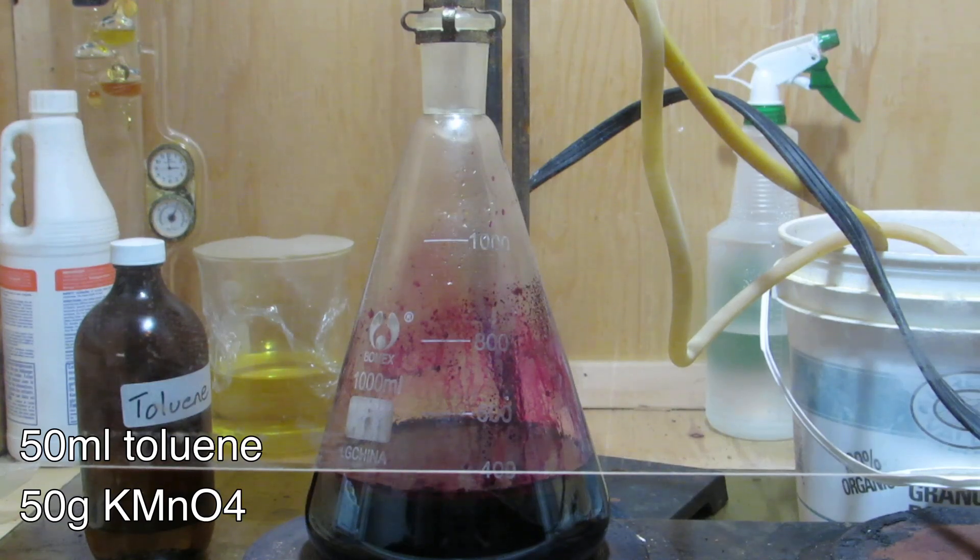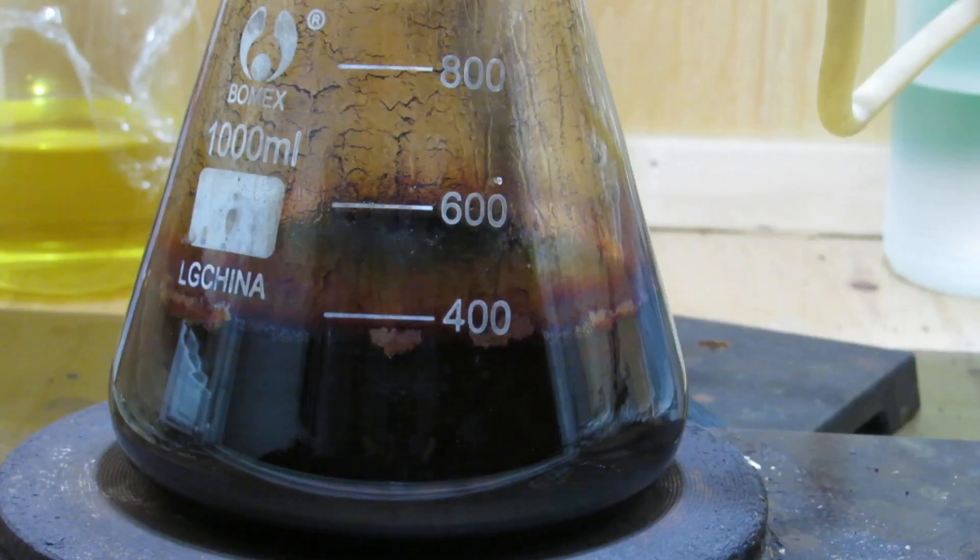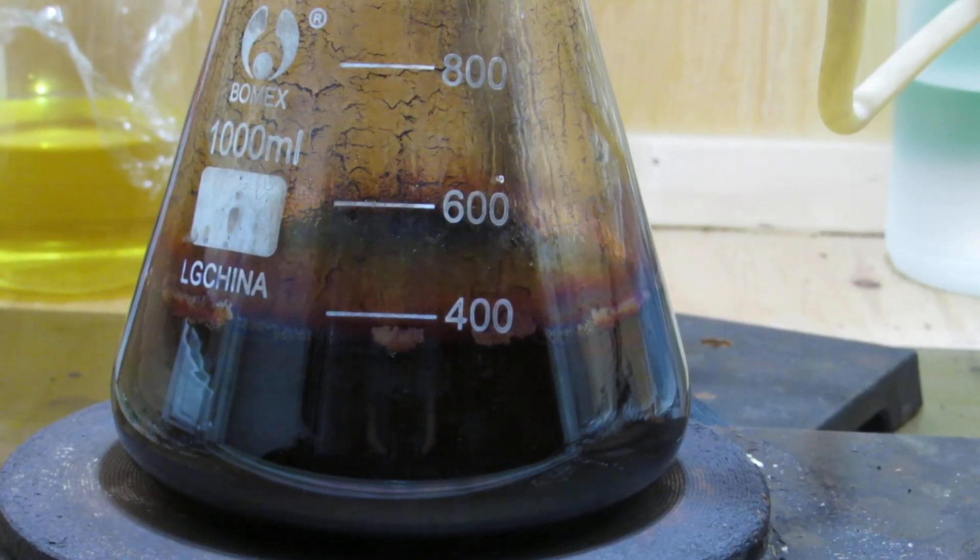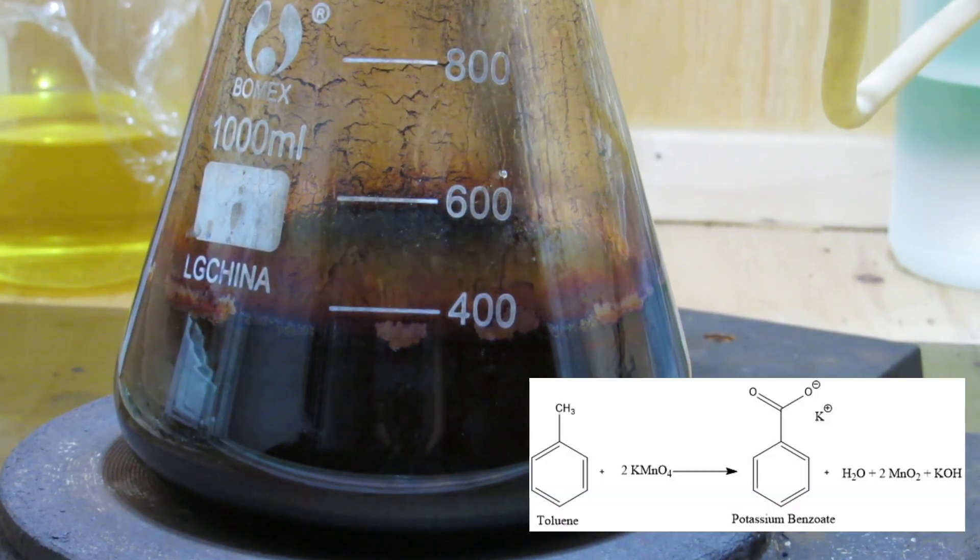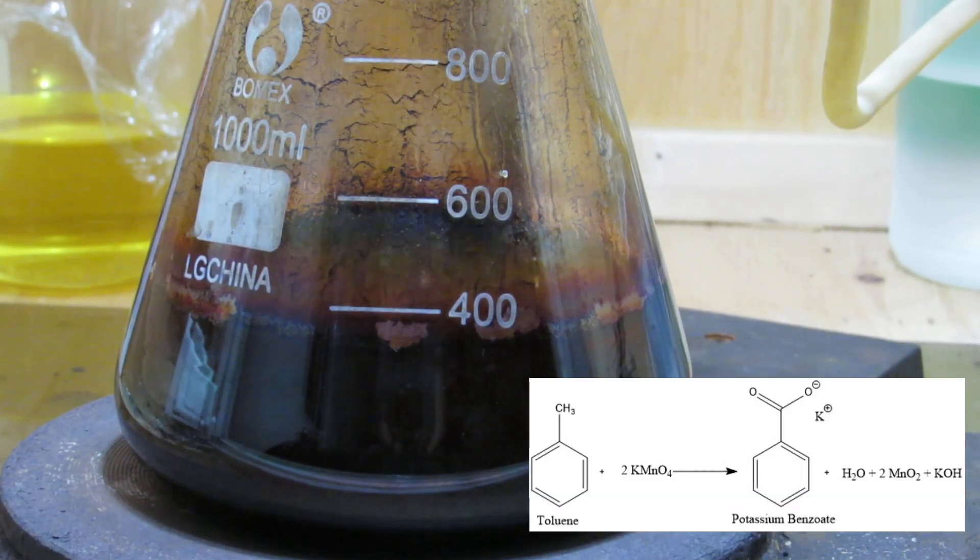Then a condenser column was set up and the mixture was heated to reflux. As the mixture refluxes, the potassium permanganate oxidizes the toluene to form potassium benzoate. Manganese dioxide is a byproduct of this reaction, so as the reflux proceeds it will accumulate in the flask.